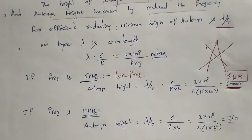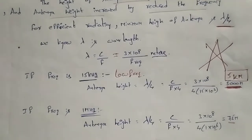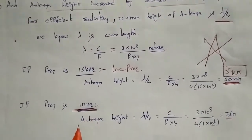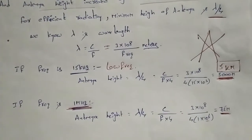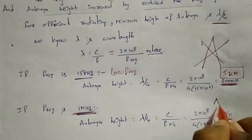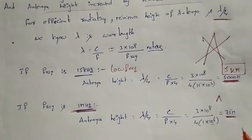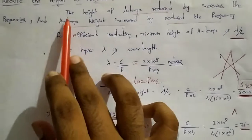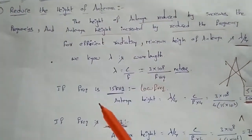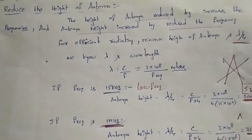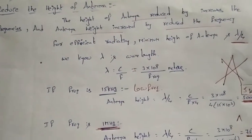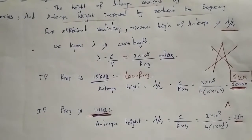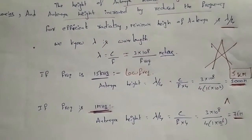So it is not possible to build a 5000-meter antenna. This method of transmitting at low frequency without modulation is not practical. By increasing the frequency through modulation, the antenna height is reduced significantly.